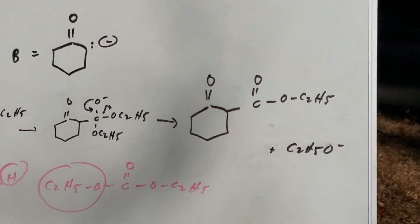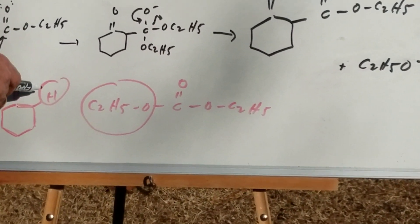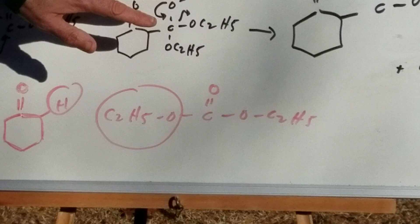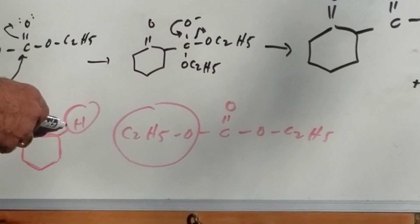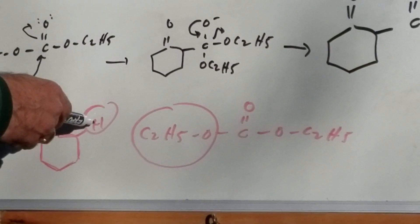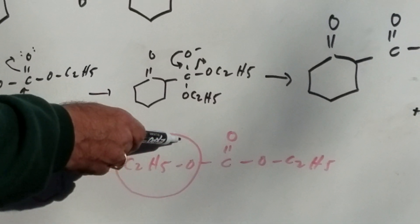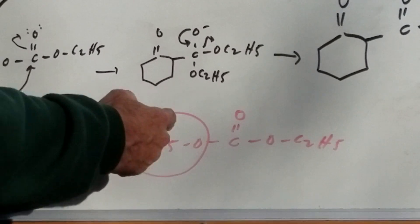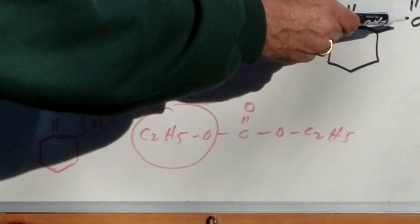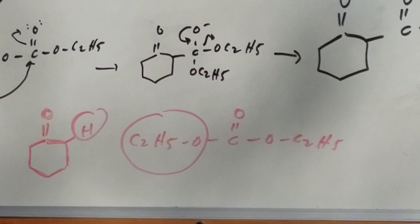Now if you wanted to do this really fast, here's what you could have done. But I like to do this because this gives you the understanding. But all I simply did is I removed the alpha proton from one and then I removed the O-ethyl from the other. And then I put them together. And if you did that in one step, you would have got something like this.